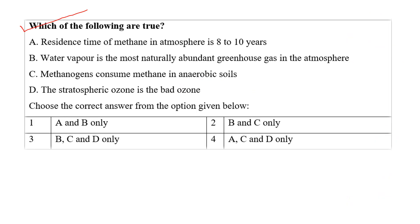Question nine: Which of the following are true? Option A — the residence time of methane in the atmosphere is 8 to 10 years — is correct. Option B — water vapor is the most naturally abundant greenhouse gas in the atmosphere — is also correct. Option C — methanogens consume methane in anaerobic soil — is wrong; methanogens form methane, they do not consume it. Bacteria that consume methane are known as methanotrophs. Option D — stratospheric ozone is bad ozone — is wrong; stratospheric ozone is good ozone, while tropospheric ozone is bad ozone. So A and B only are the right answers.